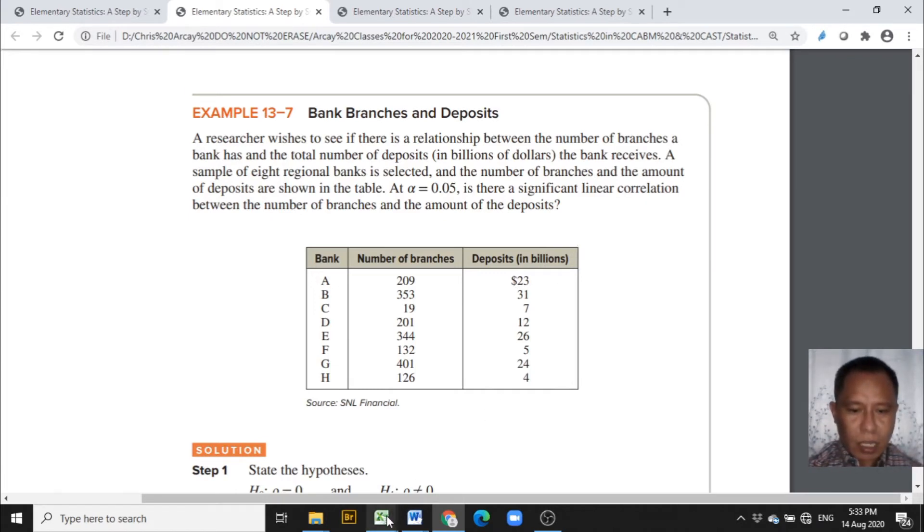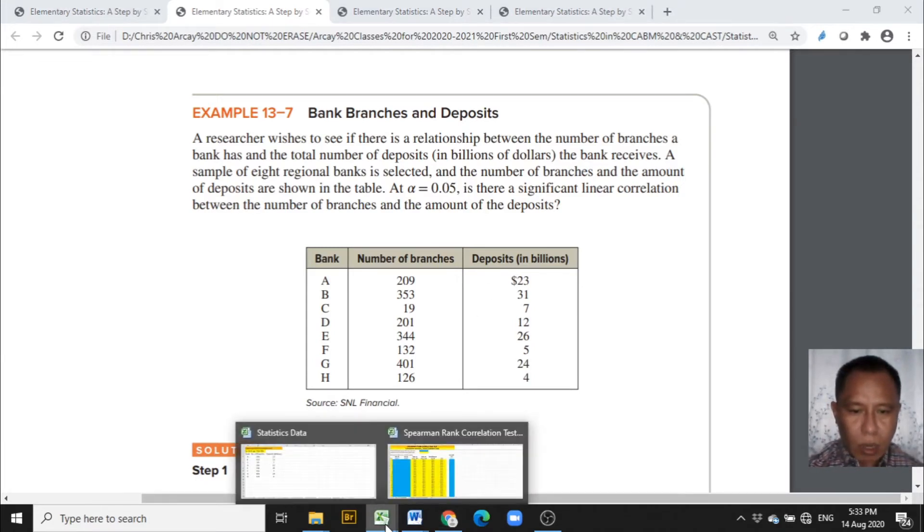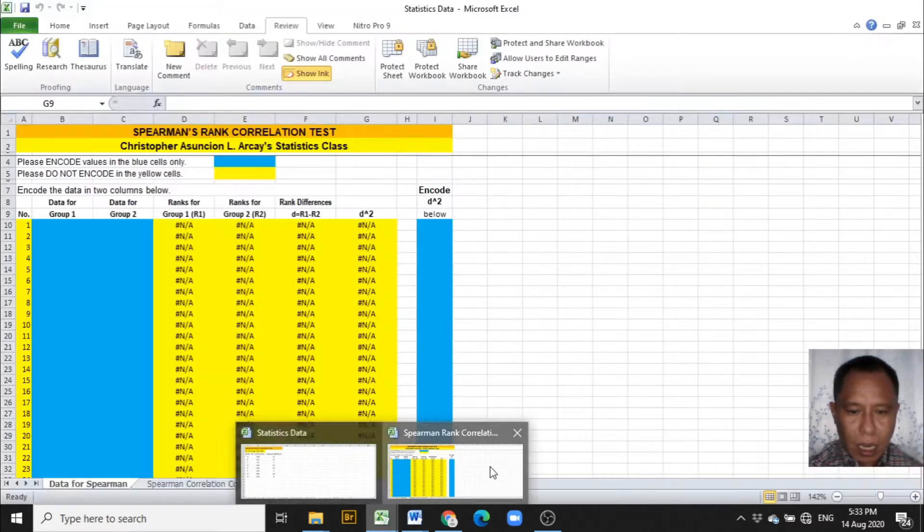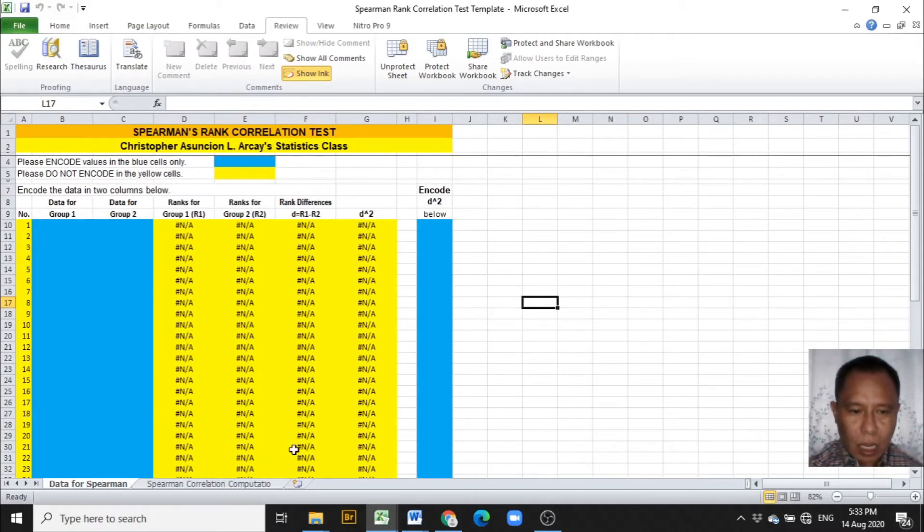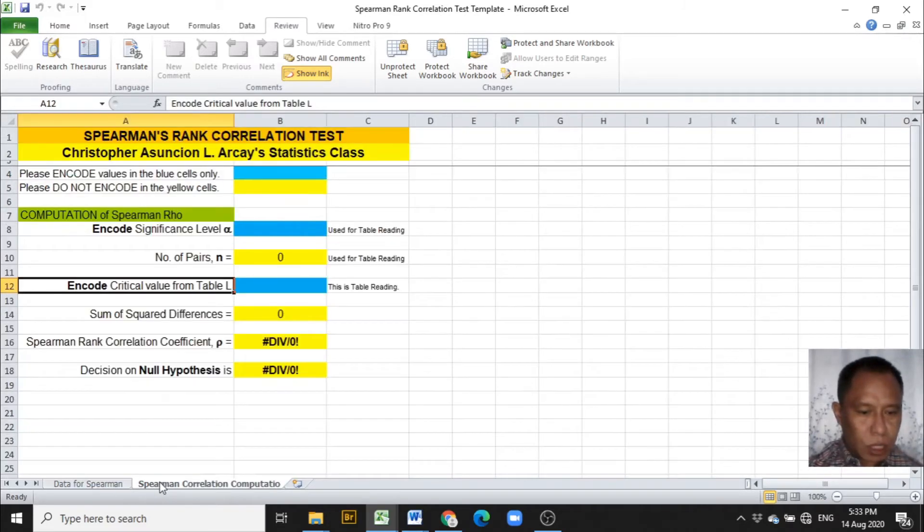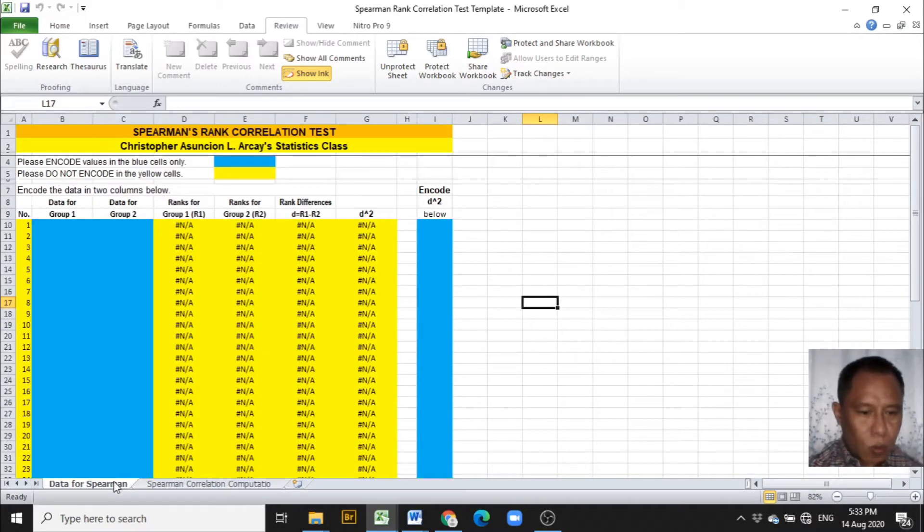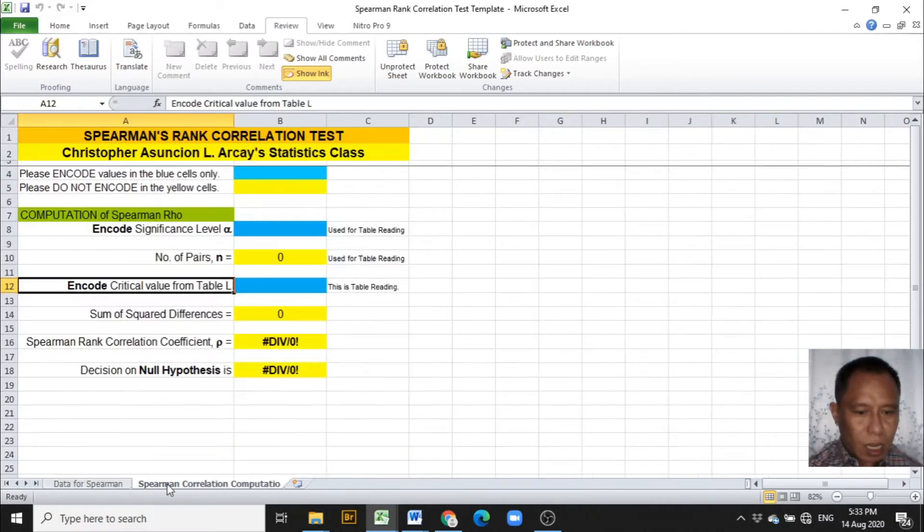At alpha equals 0.05, is there a significant linear correlation between the number of branches and the amount of deposits? We are given alpha of 0.05. Our Excel template has two worksheets: one worksheet is for the data to be encoded, the second worksheet is for the computation of the Spearman rank correlation.